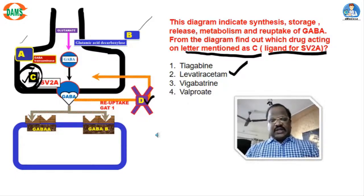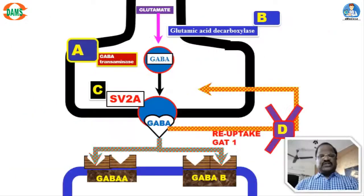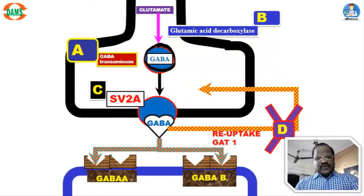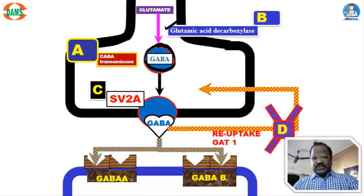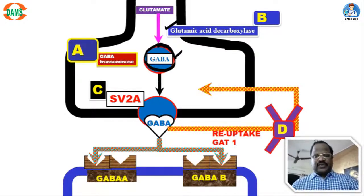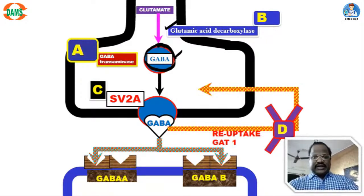Why is this the right answer? Why not the others? Let's go for discussion. First, we find GABA, an inhibitory neurotransmitter, synthesized from glutamate with the help of glutamic acid decarboxylase. So the enzyme involved in synthesis of GABA is glutamic acid decarboxylase. Once GABA gets synthesized, it gets stored — that is called storage. After storage, slowly the GABA gets released — that is called release.